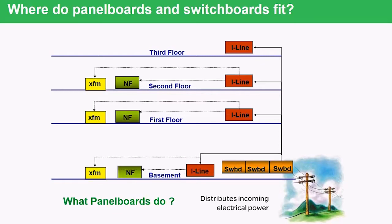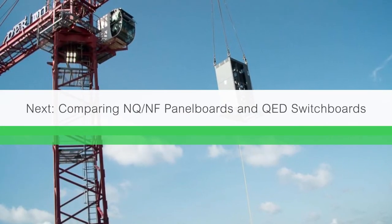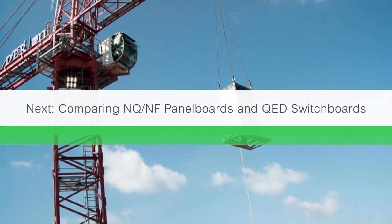From there, we can take the 480 volts and run it to a transformer — a general-purpose dry-type transformer — and convert it down to something like 208Y/120 for lighting, computer machines, and office machines. All of this can be done from the switchboard to a panel board, and we can also feed a transformer from an NF panel board.